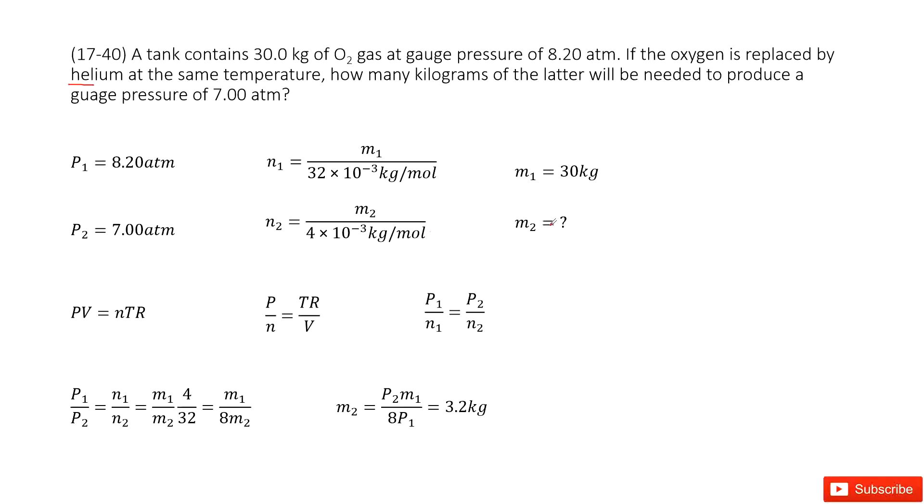We don't know the mass M2, but we know this is helium. So N2 equals M2 divided by the helium molar mass, which is 4 times 10 to the negative 3 kilograms per mole.